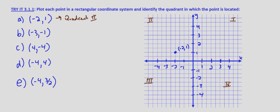Next, negative 3, negative 1. We go 3 units to the left and 1 unit down. This point right here is negative 3, negative 1. Anytime we have a negative x value and a negative y value, we're going to be in quadrant 3.